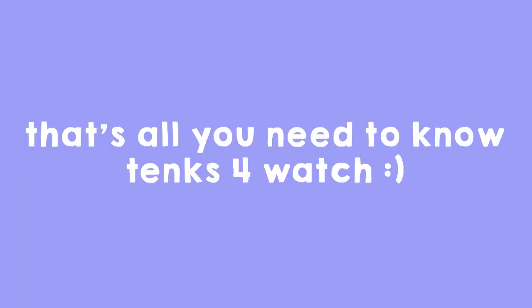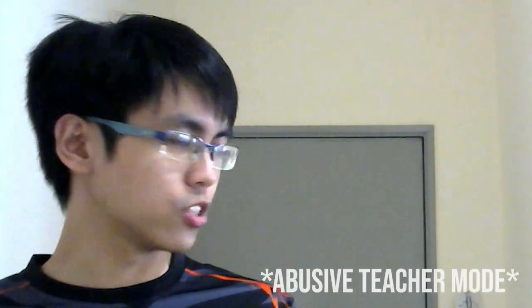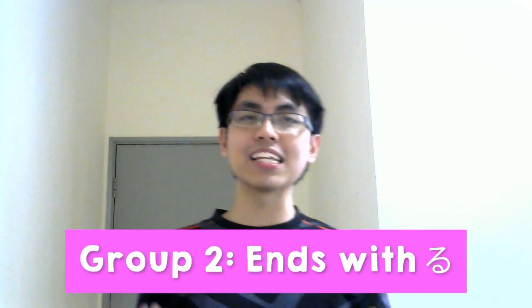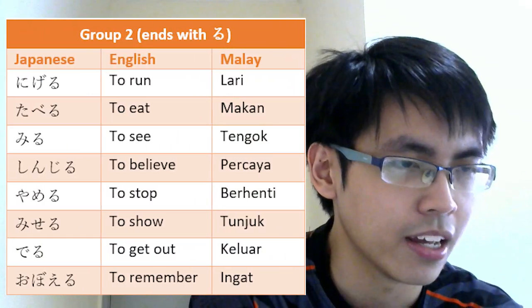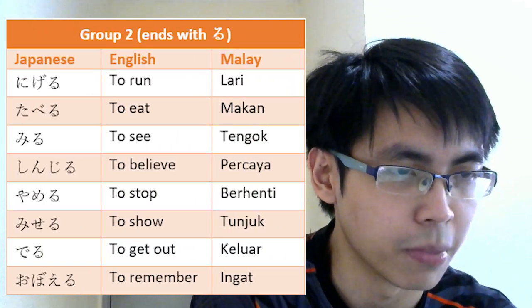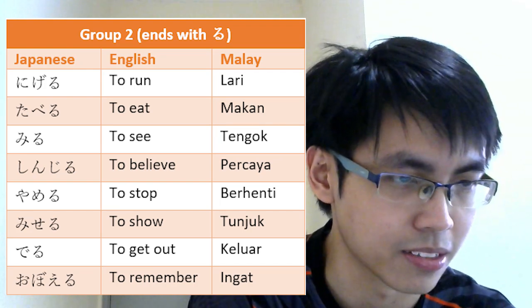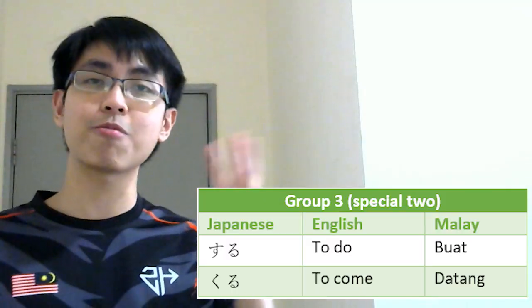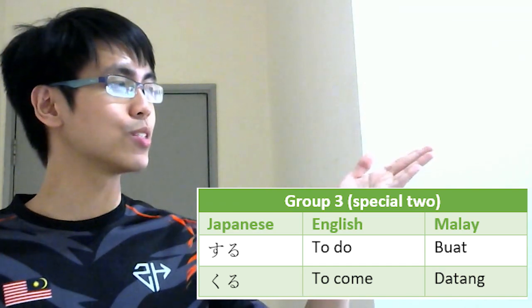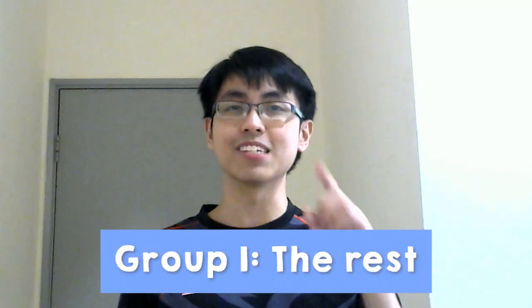Let's start with group two. Group two is easy — anything that ends with RU is group two. Group three has only two words: suru and kuru. Everything else is group one.